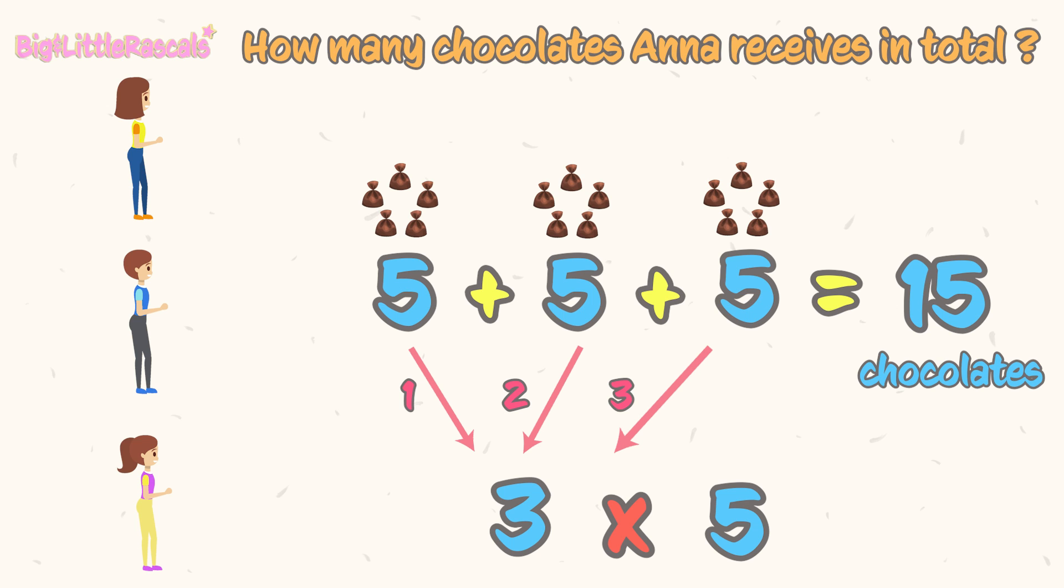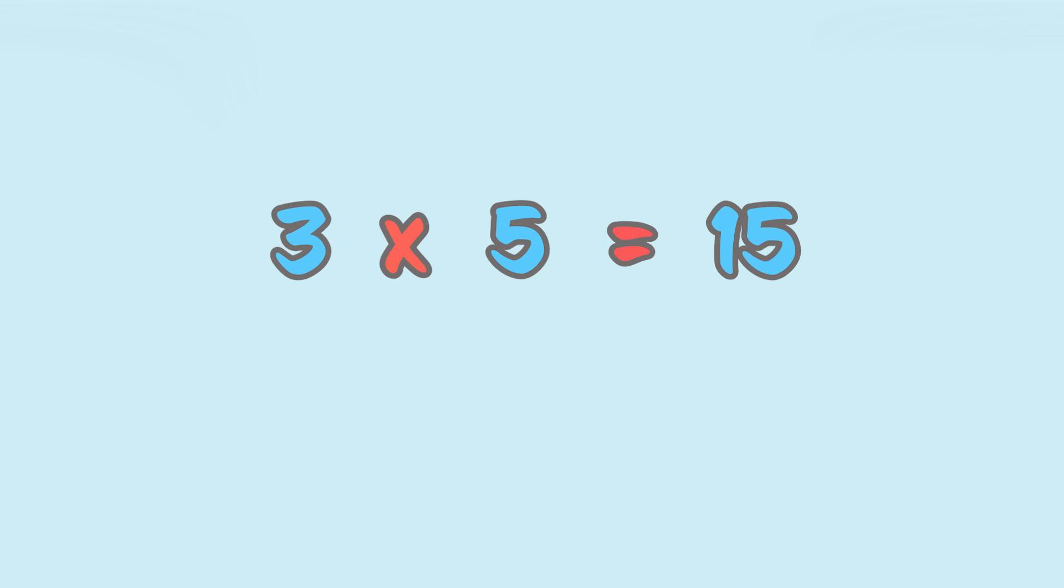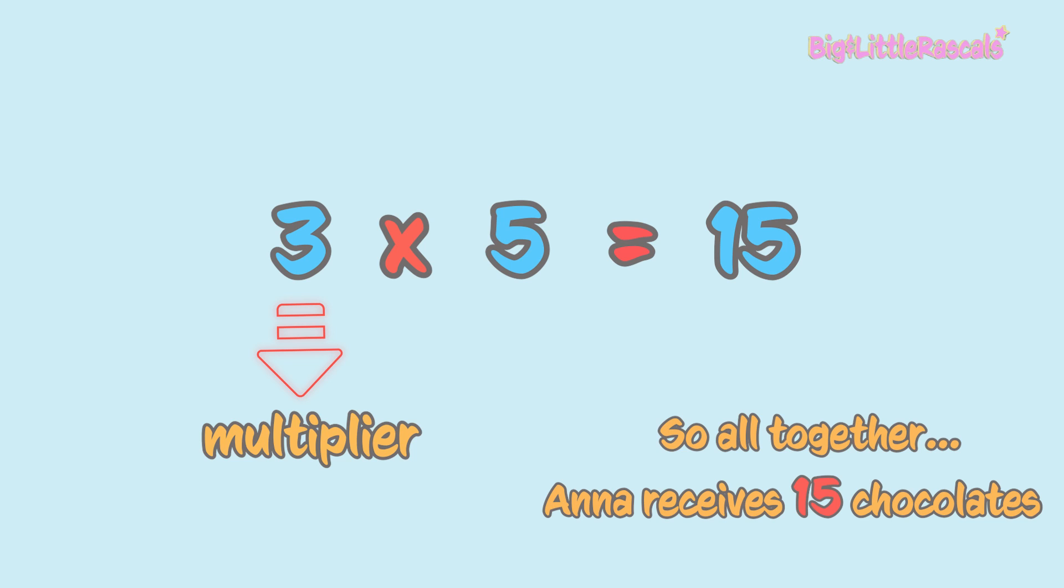So, 3 times the number 5. If we use multiplication, we write like this: 3 multiplied by 5 equals 15 chocolates. Or, 3 times 5 equals 15 chocolates.